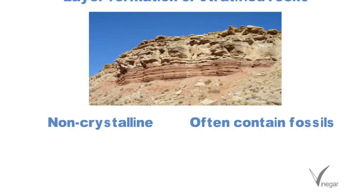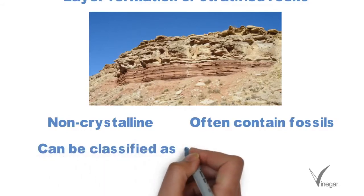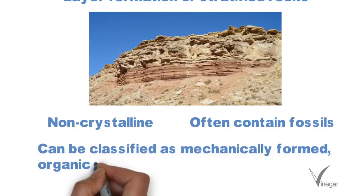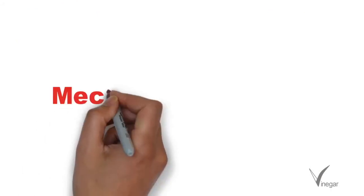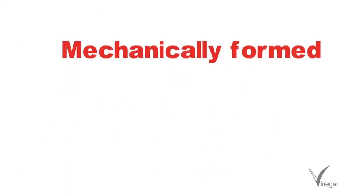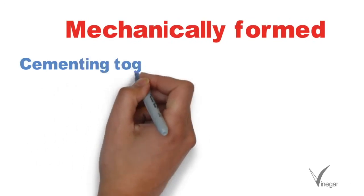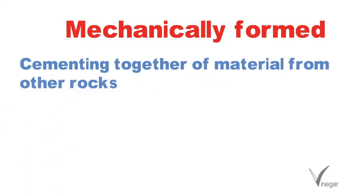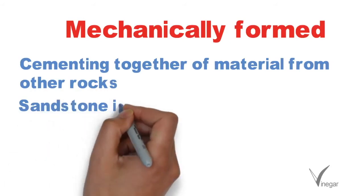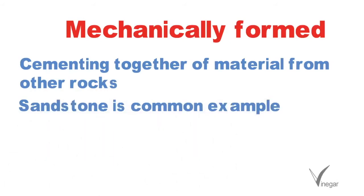Sedimentary rocks are non-crystalline in nature and the chances of finding fossils in them is higher. Fossils of plants, animals, and microorganisms can be found in them. Sedimentary rocks can be formed in three ways: mechanically, organically, and chemically. Mechanically formed sedimentary rocks are formed by cementing together of material from other rocks. Sandstone is the most common example, formed from sand grains, quartz, or granite.